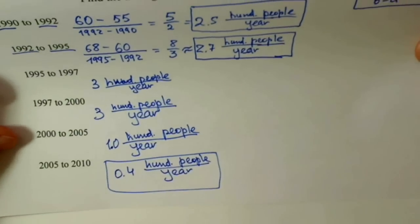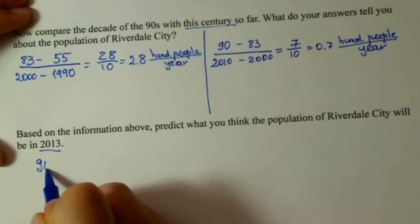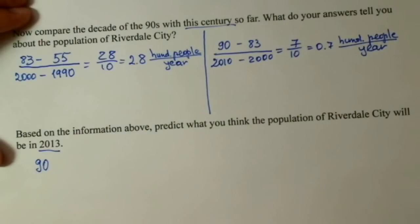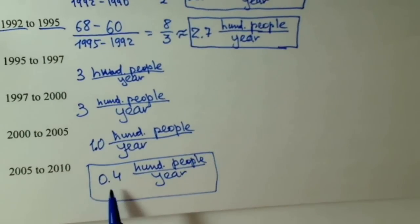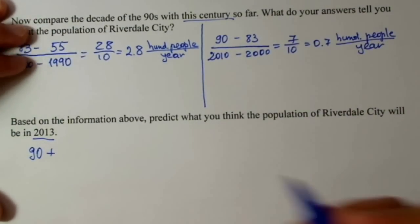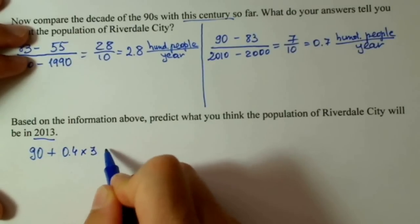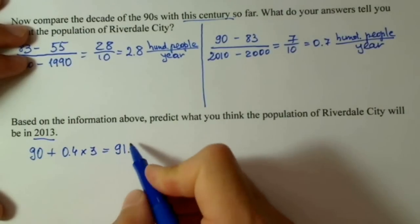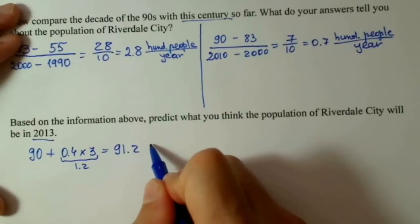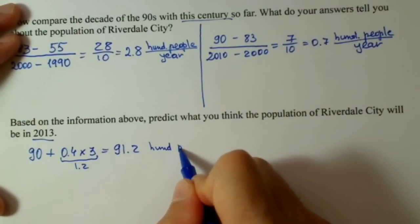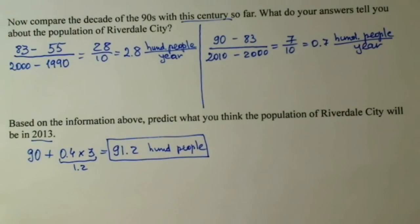I would use the 2005 to 2010 interval because it's closer to 2010 and is a shorter, more accurate interval — it shows the population average rate of change is decreasing. In 2010 the population was 90 hundreds of people. Each year it was increasing on average by 0.4, so for 3 more years: 90 plus 0.4 times 3 equals 91.2 hundreds of people. This is our predicted population in 2013.